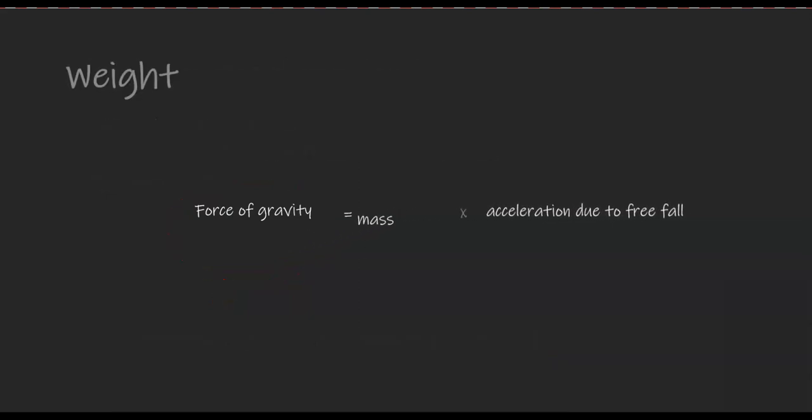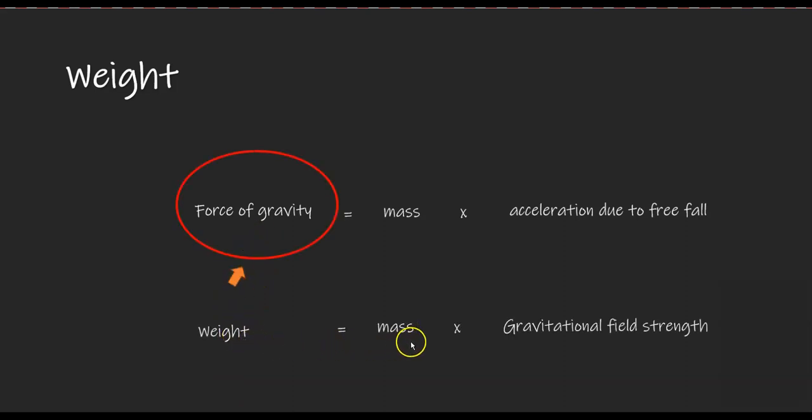Because the force of gravity is also called the weight, the formula of weight is therefore mass times gravitational field strength. From this formula, it also tells us that the greater the gravitational field strength of a planet, the heavier an object will weigh on that planet. And the greater the gravitational field strength of that planet, the greater will be the acceleration due to free fall on that planet.